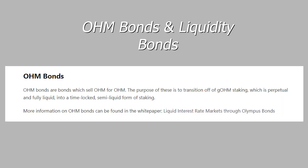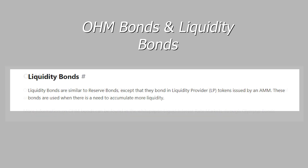Last are OHM bonds and liquidity bonds. OHM bonds work by selling OHM for OHM in order to transition off of GOHM into a time-locked semi-liquid token for staking. Liquidity bonds are similar to reserve bonds except that they bond in liquidity provider tokens issued by an AMM, and are used when there is a need to accumulate more liquidity.